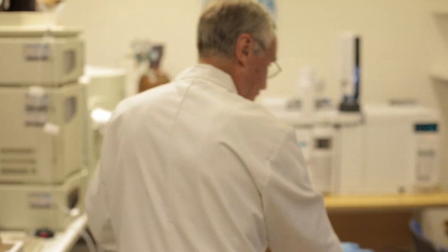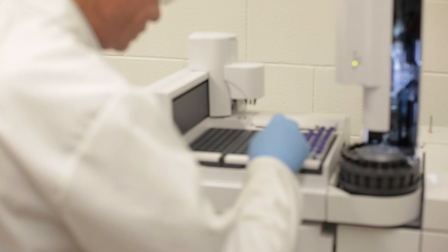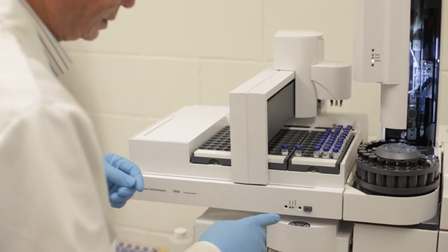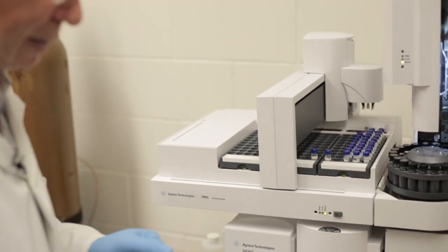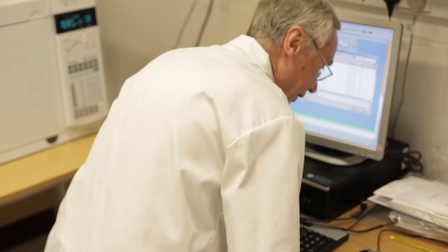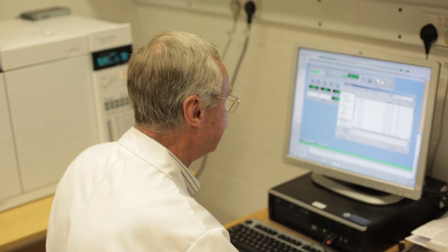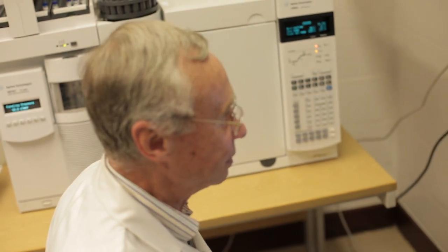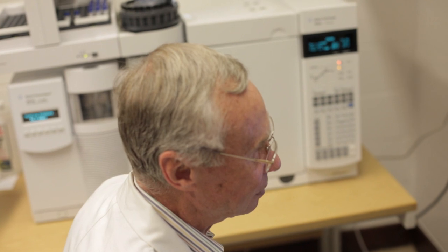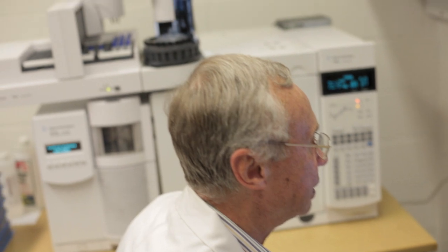So now we're going to put it on the mass spectrometer. Now what I do is need to do some entry on the computer. Okay. Now the machine is all set up ready to run the sample. It's going to inject a small amount of that onto the gas chromatograph which will separate it into its components and then produce a fingerprint of each of those components. So we'll tell it to run the sequence.